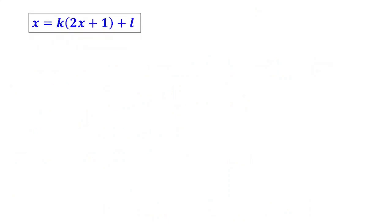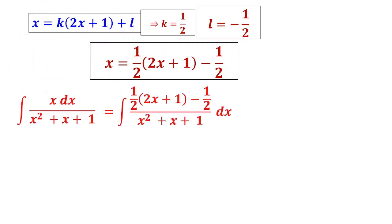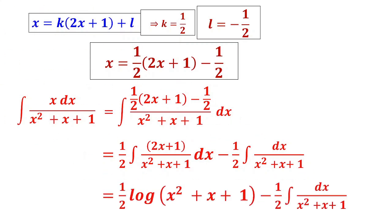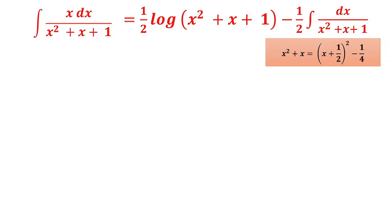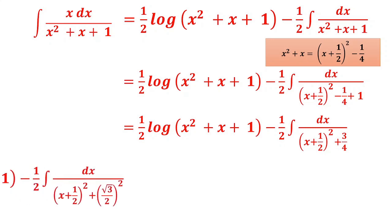So x = (1/2)(2x+1) − 1/2. Check: (1/2)·2x = x, (1/2)−(1/2) = 0 ✓. The integral splits into: (1/2)∫(2x+1)/(x²+x+1)dx − (1/2)∫dx/(x²+x+1). First integral is (1/2)·log(x²+x+1). For the second, write x²+x = (x+1/2)²−1/4, so x²+x+1 = (x+1/2)²+3/4.